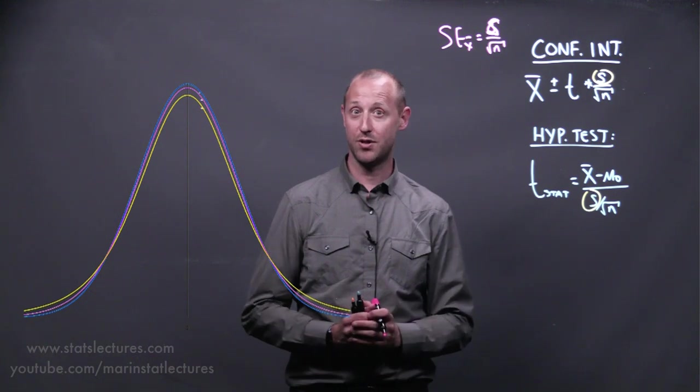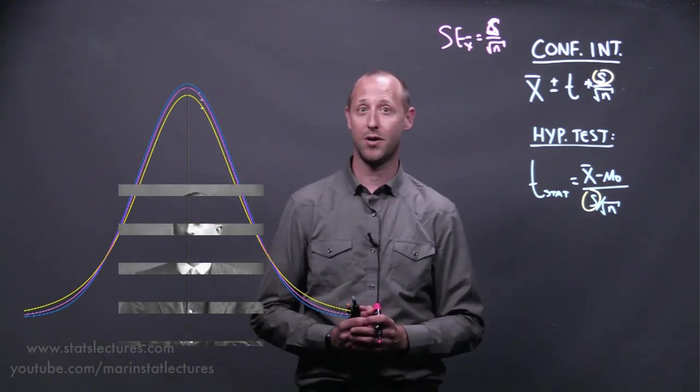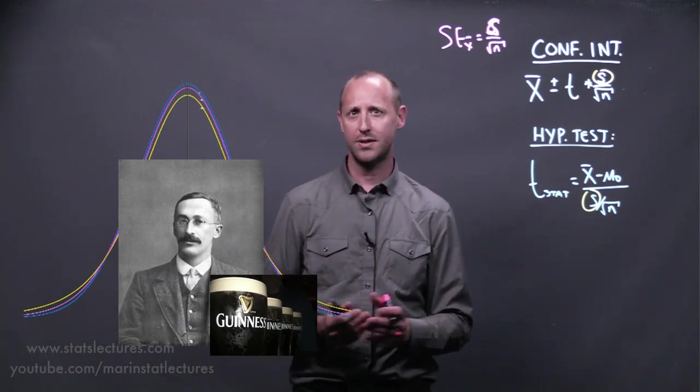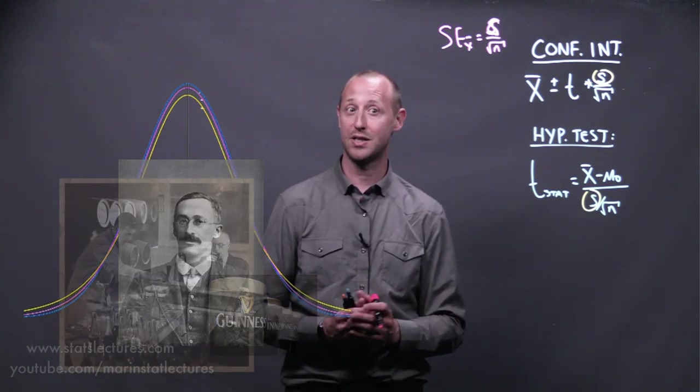The t-distribution came from William Gossett, who was working on quality control at Guinness breweries. With quality control, you tend to take small sample sizes,